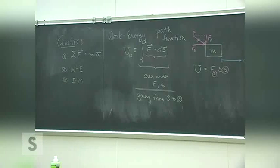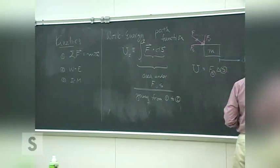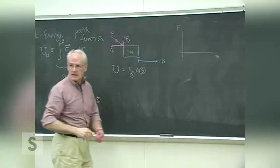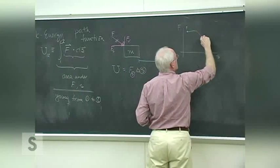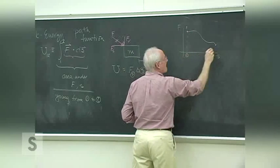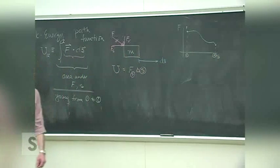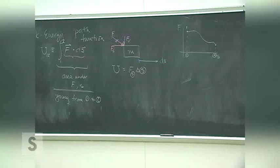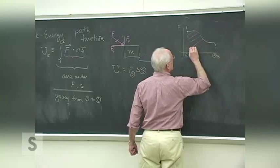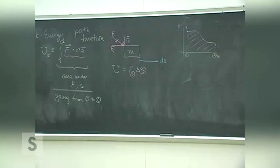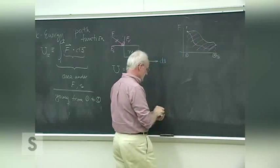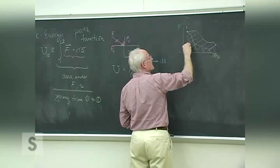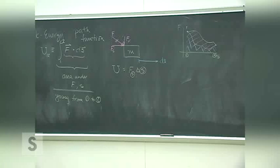Work is a path function because the work done depends upon the path taken. If we have a force-position diagram where the force depends on position as we go from point one to point two, the work done depends on the area under that curve. The path determines what that area is. If we take two different paths from one point to the other, we get two different areas and two different amounts of work done on our object.